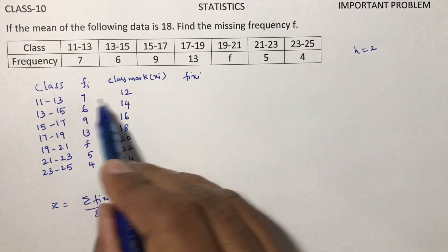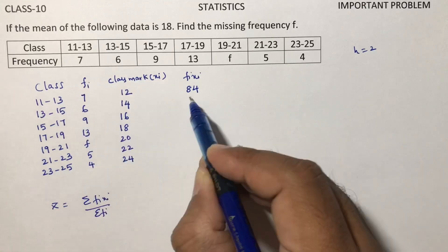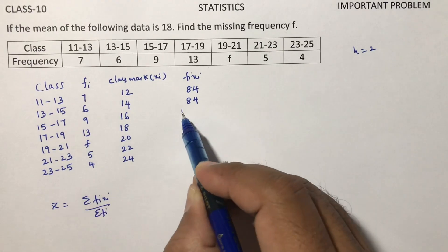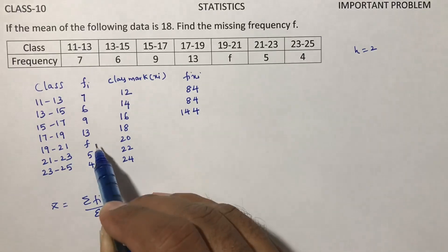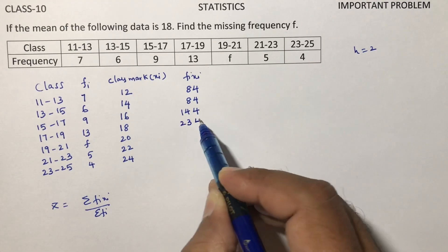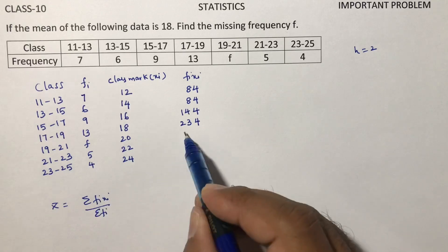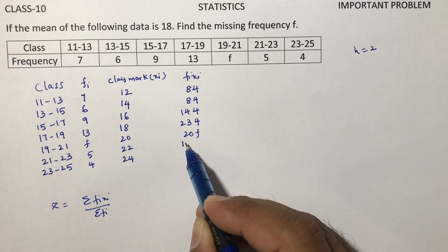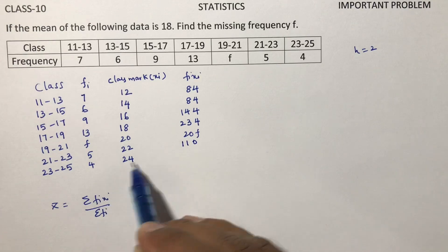7 times 12 is 84. 6 times 14 is also 84. 9 times 16 is 144. 13 into 18 is 234. F into 20 is 20F. 5 into 22 is 110. 4 into 24 is 96.